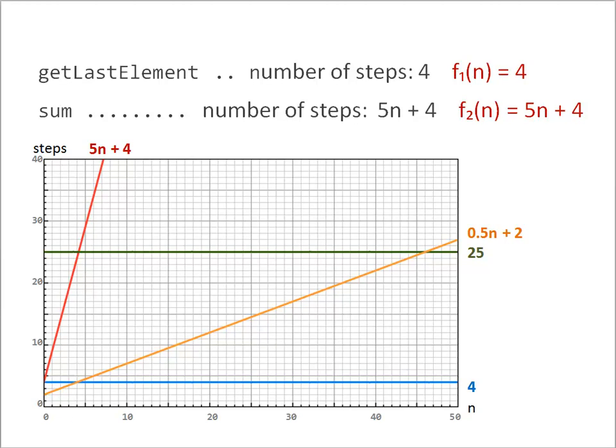Let's have a look at the amount of work that it takes to execute the different methods for input size 3. You can see here, the most effort, the most steps are required for the constant graph 25. More than for the graph representing sum. More than for the constant 4 representing get last element. And the graph that takes the least amount of steps is half an N plus 2.